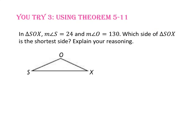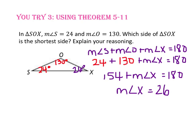Pause the video and do you-try number 3. In triangle SOX, the measure of angle S is 24 degrees and the measure of angle O is 130 degrees. Which side of triangle SOX is the shortest side? Let's find angle X using the triangle angle sum theorem. Now that we know angle X is 26 degrees, the smallest angle is angle S, so the shortest side in triangle SOX is the side opposite angle S, which is side OX.